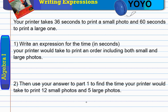I'm going to have you try. So, here's your situation. Your printer takes 36 seconds to print a small photo and 60 seconds to print a large one. I would like you to write an expression for how much time it would take if your printer is going to take both printing small and large photos. How much time would it take? Can you write an expression? And then, can you use that expression to find how much time it would take if your printer is actually going to do 12 small photos and five large ones?